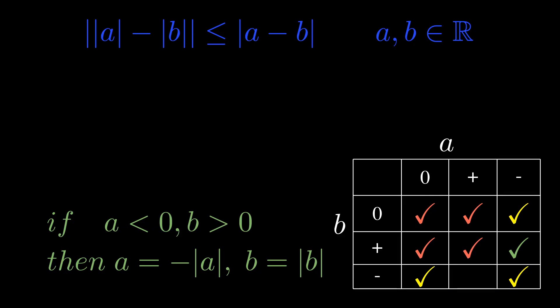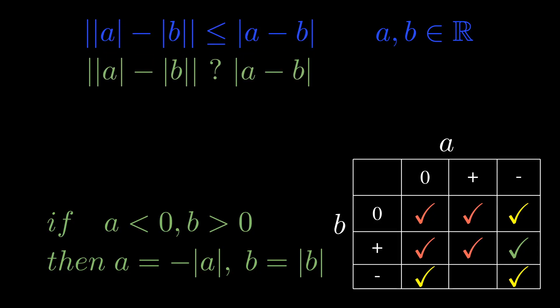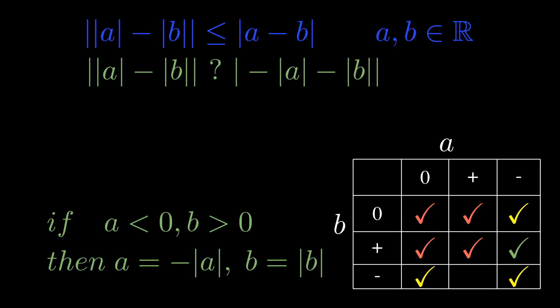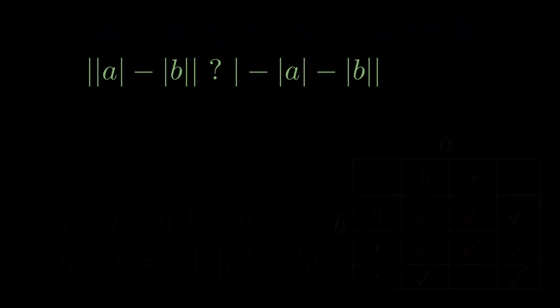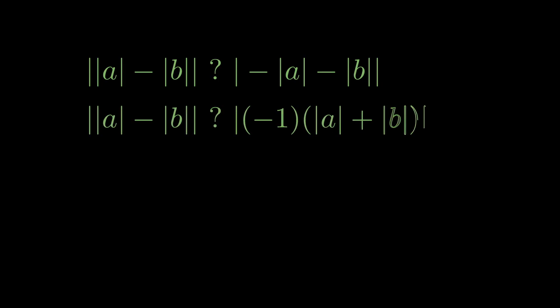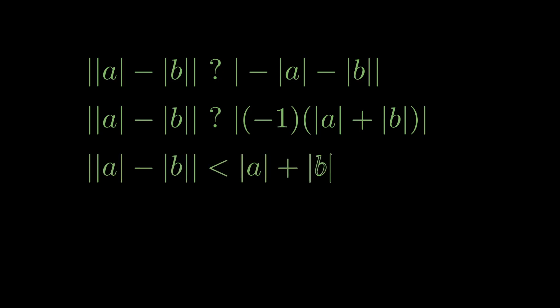Now if you take the inequality — in particular the right hand side — and substitute those two, you'll see that a negative is popping up. We are going to factor out that negative, and when we do that, we get a negative one in front, and the absolute value of negative one is just one. And the difference will always be smaller than the summation.